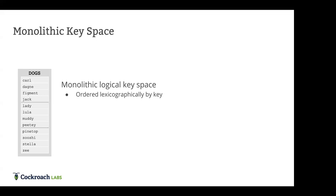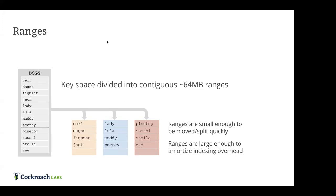So how does CockroachDB do this? Data in Cockroach is just tables — this is a distributed SQL database. This is SQL, not some weird variant. We aren't requiring you to learn a new language. We are wire-compatible with Postgres and really built for large read/write distributed transactional workloads. Underneath the covers, the table is a table — implemented as a monolithic logical ordered key space. So you might have rows like Carl, Downey, Figment, Jack — all in order. We have this ordered list of data, and we break a table down into contiguous 64-megabyte chunks.